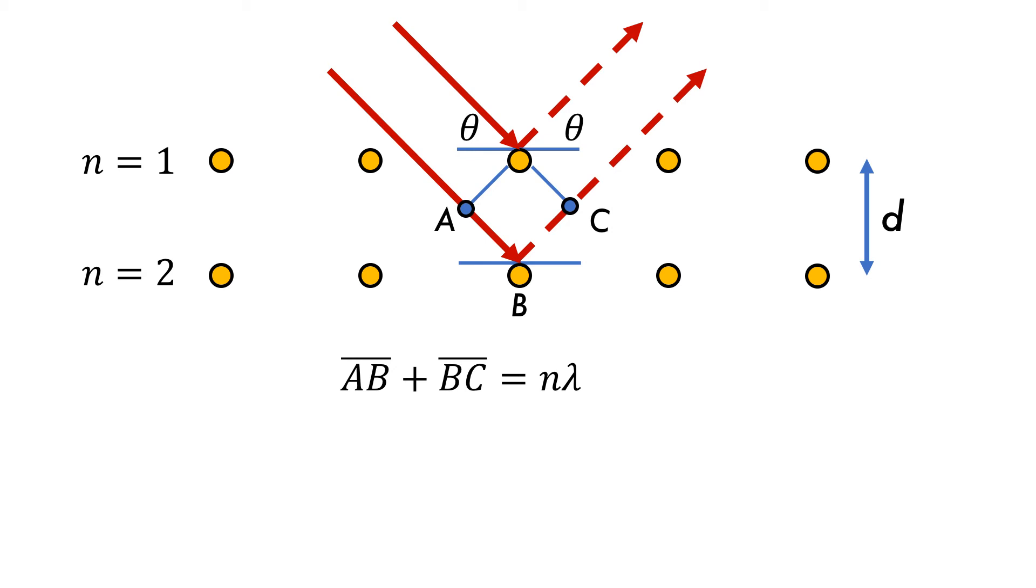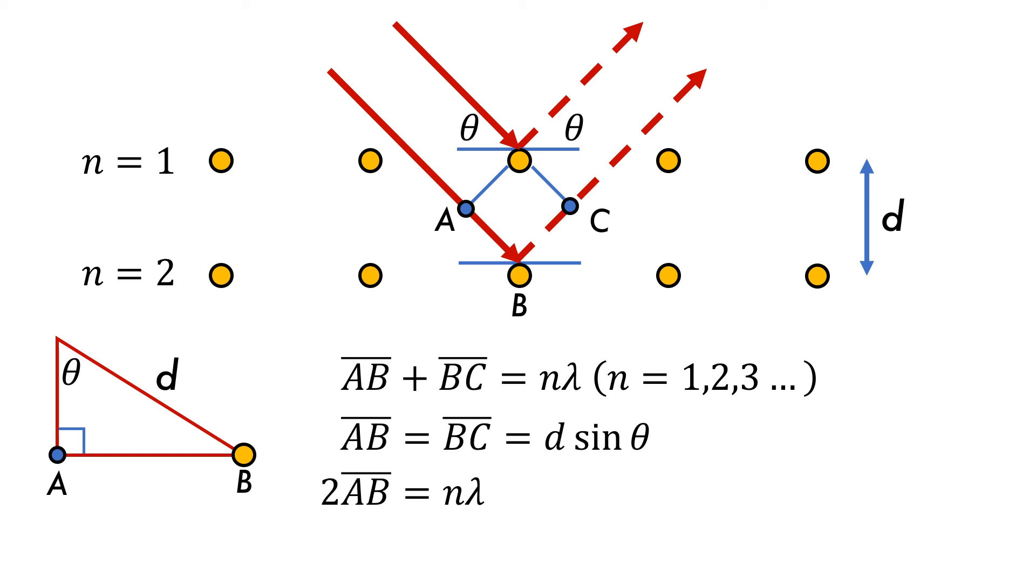Since the point A is orthogonal to the incident wave, we can form a triangle between it and point B, the second layer atom, with D as the hypotenuse. We can then relate these since AB is opposite theta, giving us AB equals D sin theta. Because AB equals BC, the first equation becomes 2AB equals n lambda, which we can then substitute into the previous equation in order to obtain Bragg's law as n lambda equals 2D sin theta.